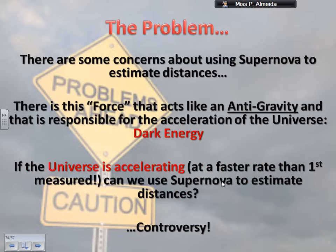There is something else that we don't fully account for when estimating distances: dark energy. Dark energy acts like a force — a kind of anti-gravity — making the universe spread outwards and accelerate, with everything moving away from each other. We know the universe is accelerating, but according to our latest data, it's accelerating at a faster rate than we first expected and measured. So some scientists ask: can we really use supernovae to reliably estimate these distances?